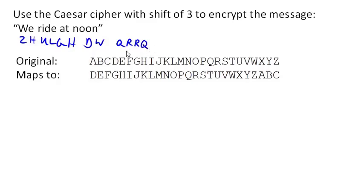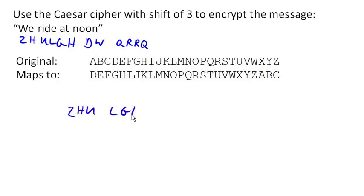Now if we just sent it like this, somebody might be able to guess at what some of these words are based on how long they are. So it's typical to either combine all the letters into one big long string, or to chunk them up in some standard chunking — for example, grouping them three characters at a time. And there would be our encrypted message.